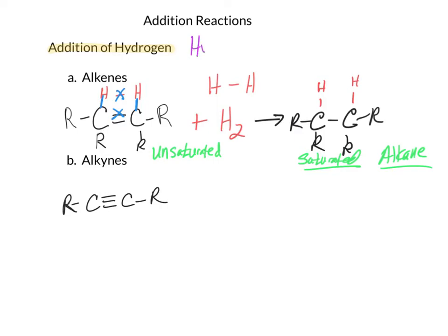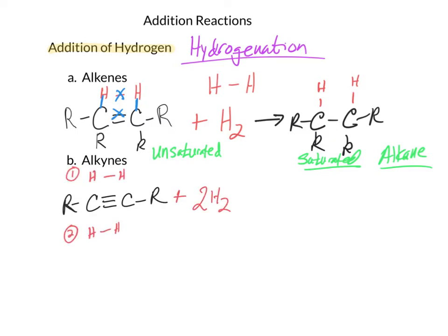This reaction is called hydrogenation. When this reaction occurs on an alkyne, the hydrogen is added twice — making a bond, breaking a bond, making a bond, breaking a bond, and then repeating the process — so that when we're done we have an alkane with two hydrogen groups added on instead of just one.